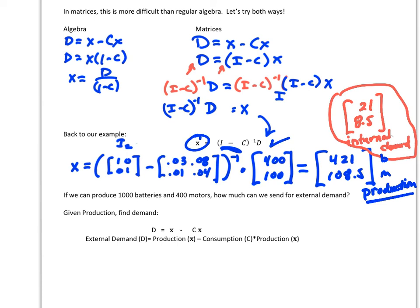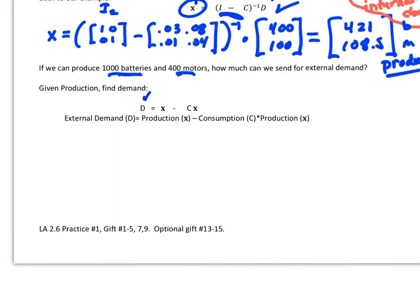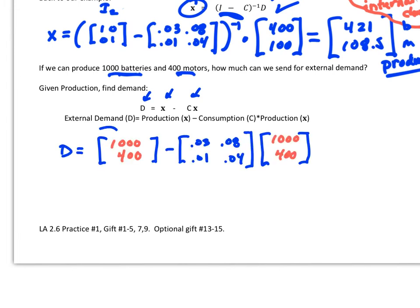So given demand, I want to find production. I've got to use this formula right here. What if we flip this around a little bit? Now we know how much we can produce, and then we want to know how much we can send for external demand. So we're going to send our salespeople out and see how much we can put out there if I know that my production levels are this. So I'm going to now use this formula, where I find the demand, because I know the production, and I know my consumption matrix, so I should be able to figure out what this external demand is for us.